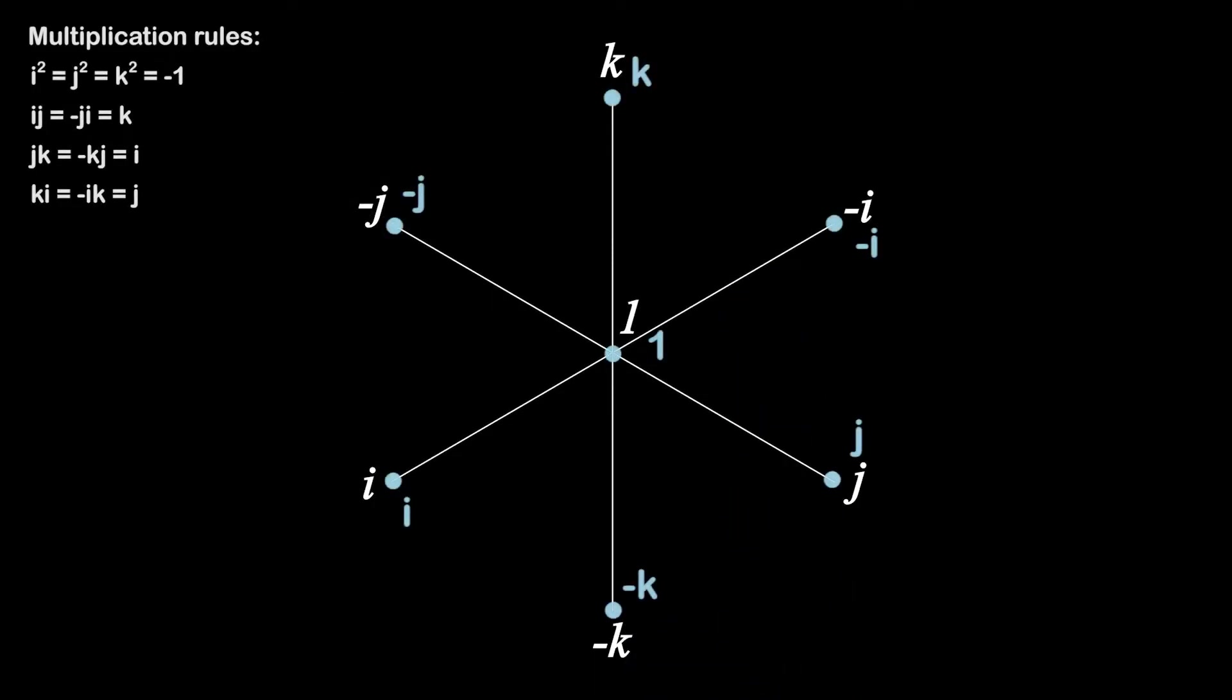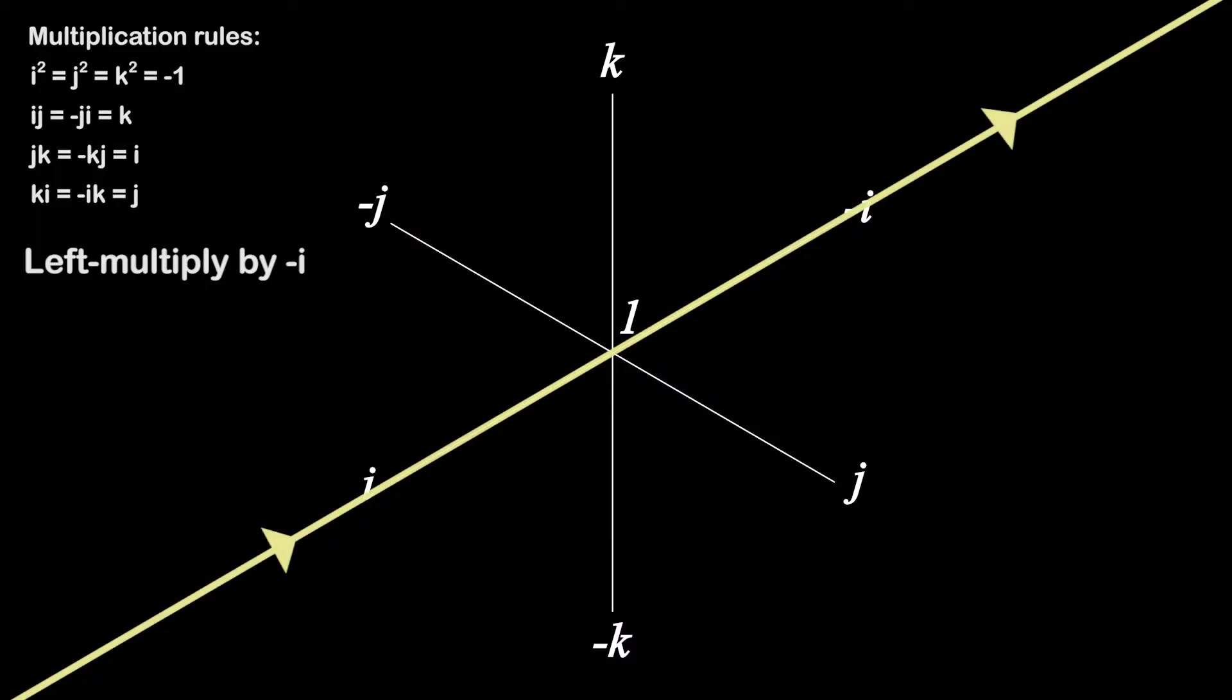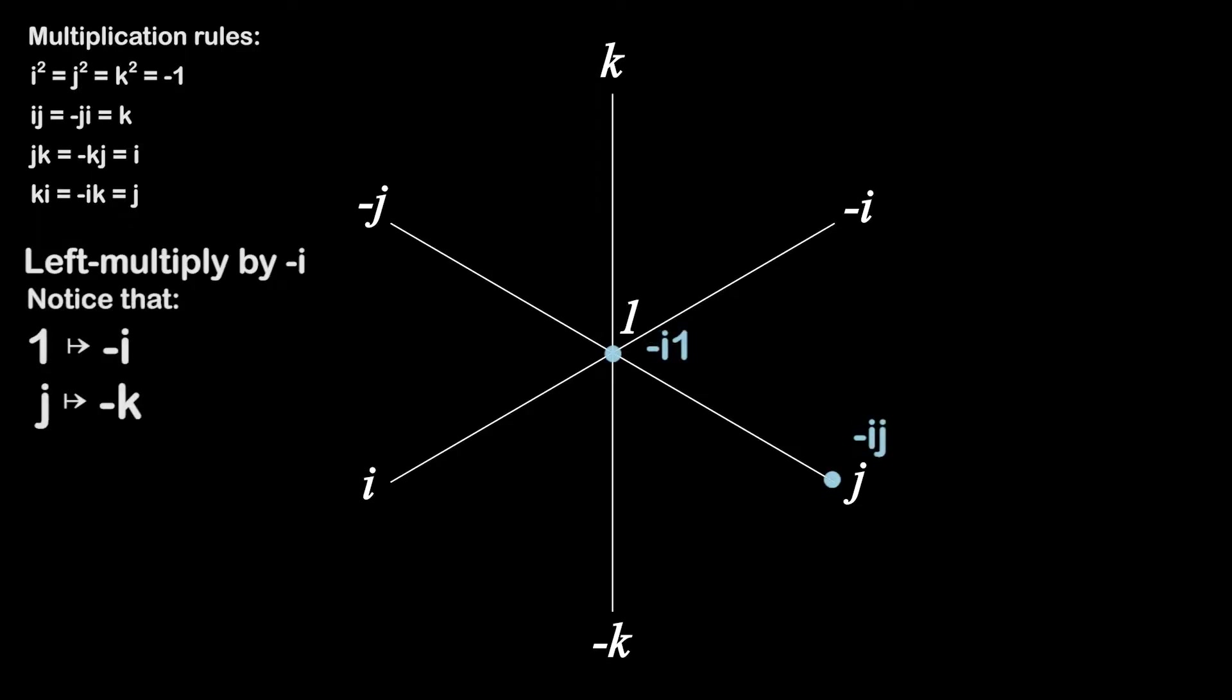Now, let's see what happens when we left multiply by minus i. That's not too surprising, it just rotates the same two circles in the opposite direction than positive i did. Again, focusing on 1 and j, we see that 1 gets mapped to minus i and j gets mapped to minus k.